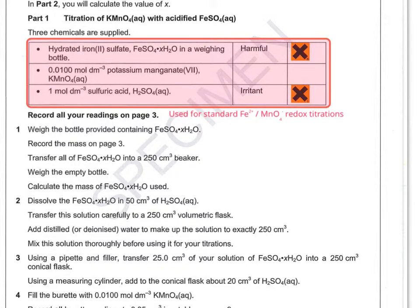So the sulfuric acid at one mole per decimeter cubed is treated as irritant. Hydrated iron sulfate would be harmful in solid form. But 0.0100 mole per decimeter cubed of potassium manganate wouldn't have a risk assessment rating at this point, and that's because the action that's been taken would be the use of a very low concentration.